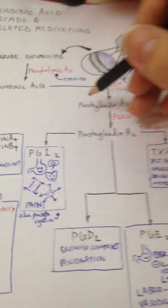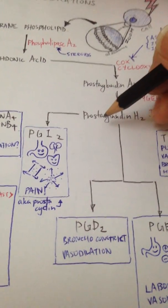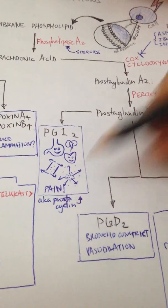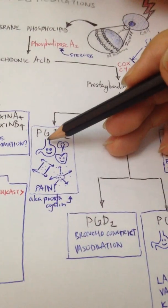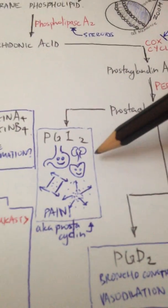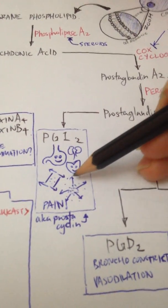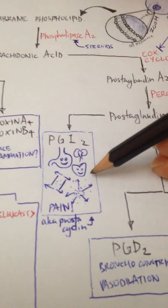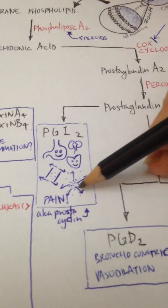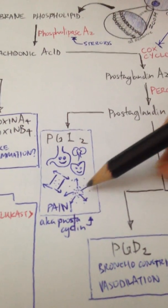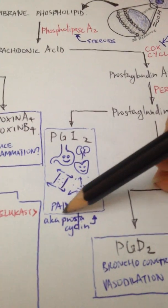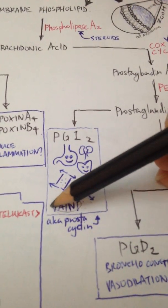Let me introduce some of the main players. We have prostaglandin I2, also known as prostacyclin. This guy is gastric mucosa protective, so you can see the smiling stomach. It also supports blood flow to the kidneys. It's cardioprotective because it doesn't promote platelet aggregation; it does the opposite. It's also a vasodilator but also contributes to the feeling of pain.